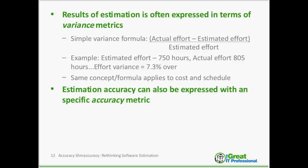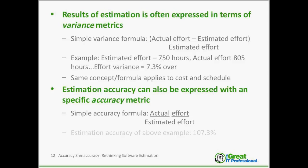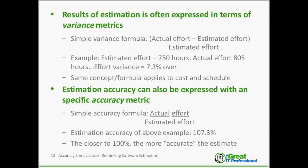The other metric often used is a specific accuracy metric. The accuracy formula is actual effort divided by estimated effort, resulting in a similar number but read differently. In the same example, estimation accuracy would be 107.3 percent, meaning we were 7.3 percent over. A perfectly accurate estimate would be 100 percent — if we nailed exactly what we ended up spending on the project.